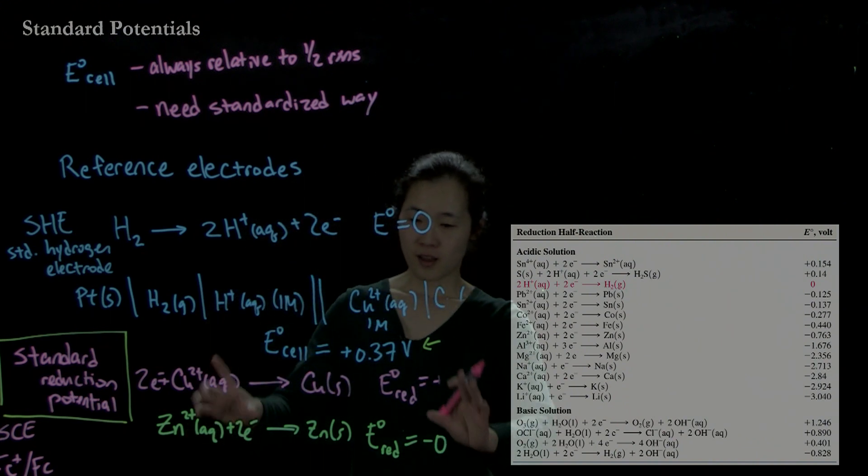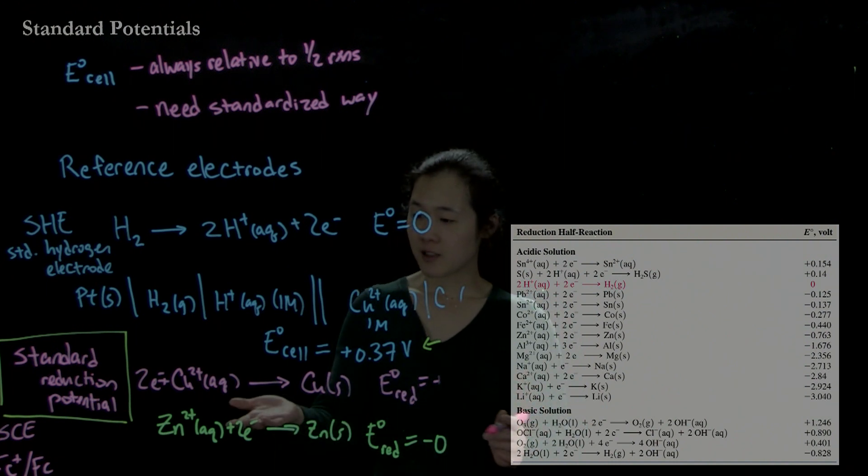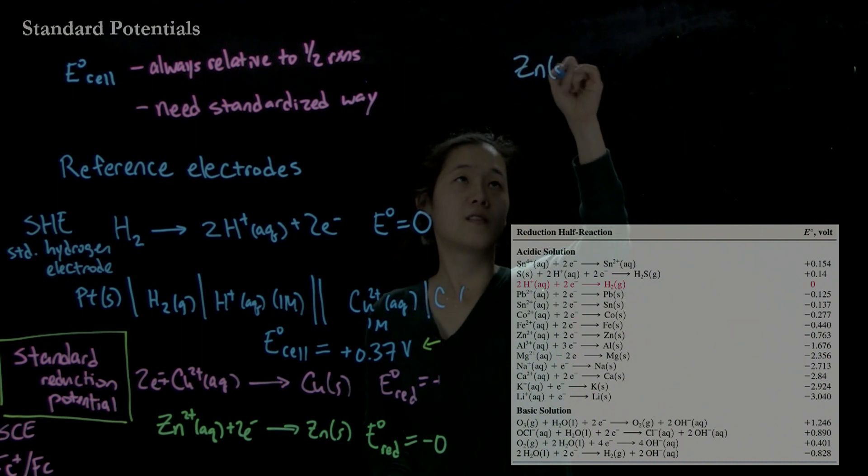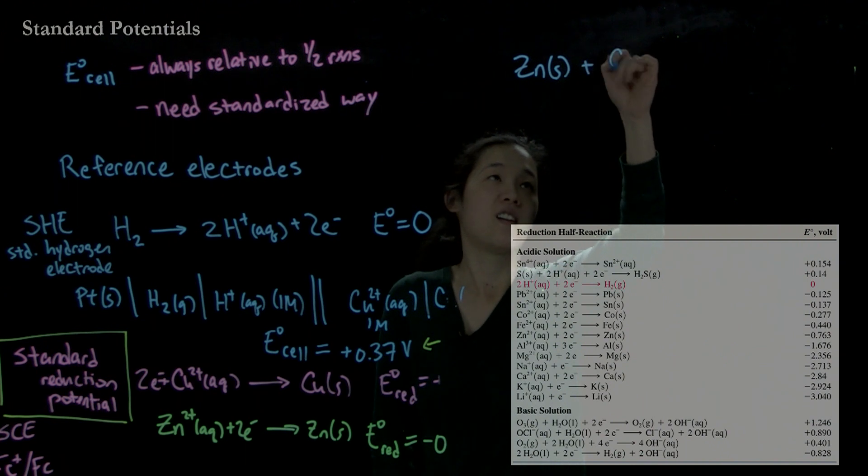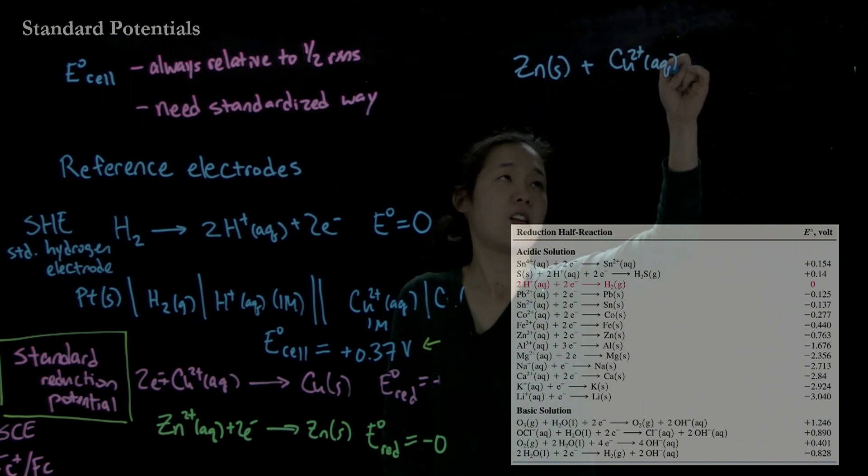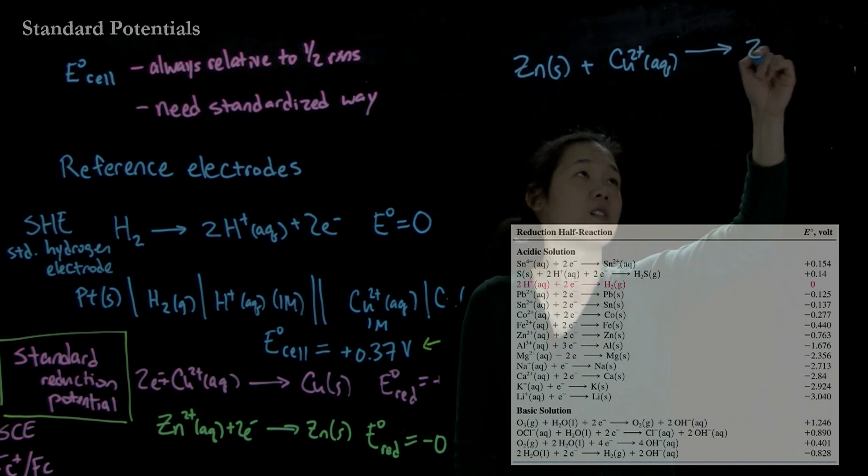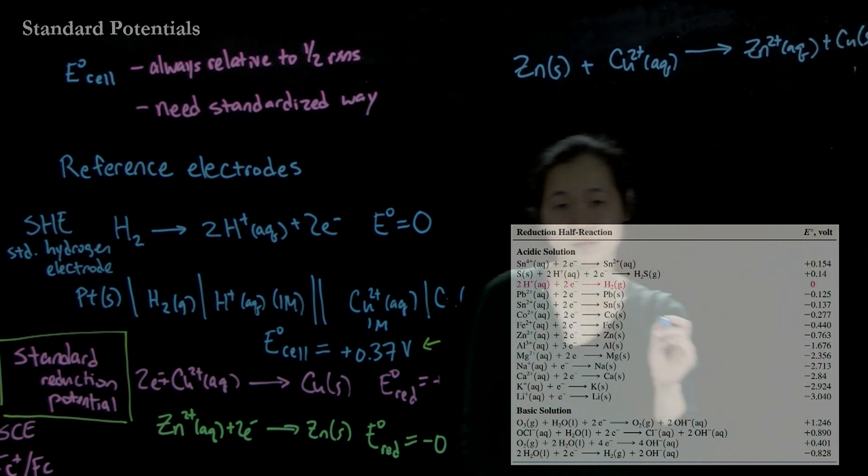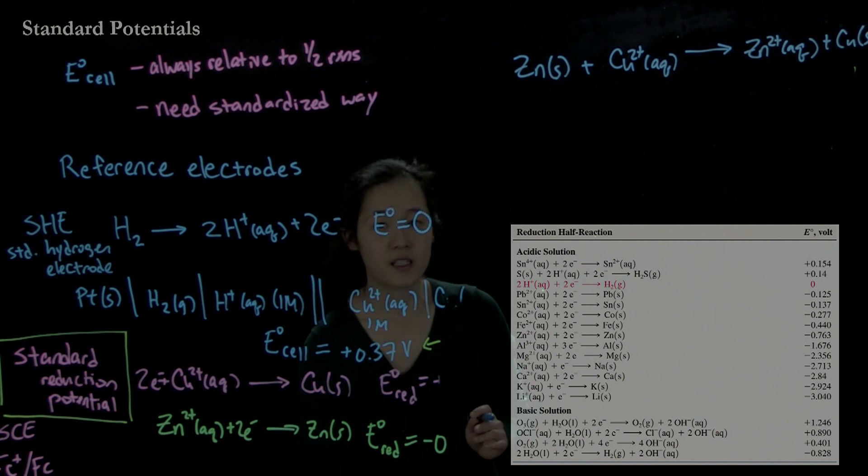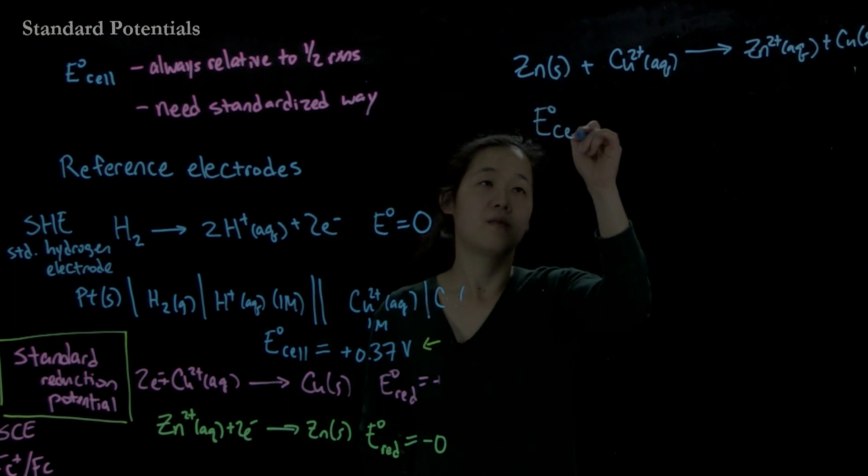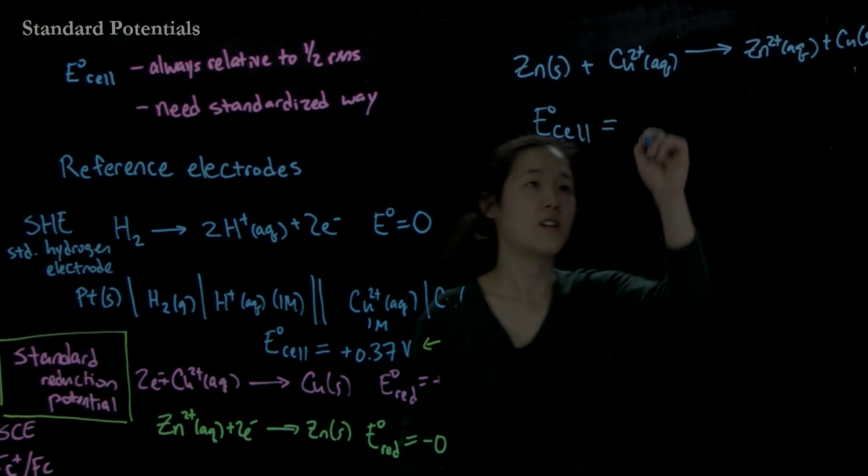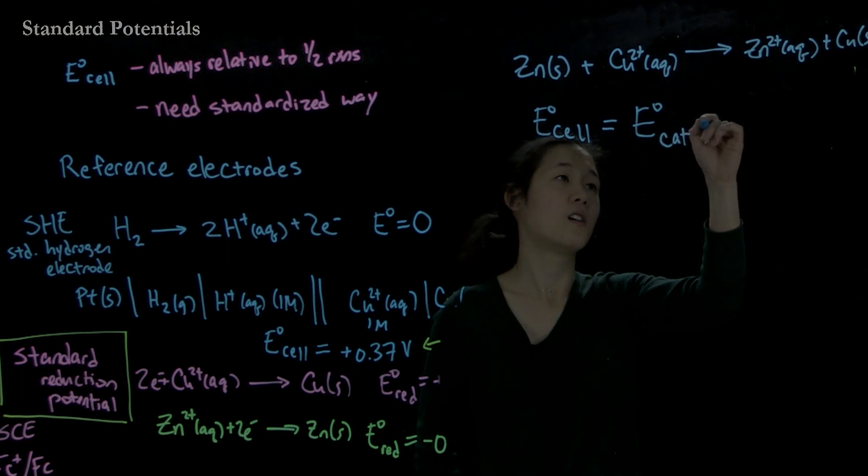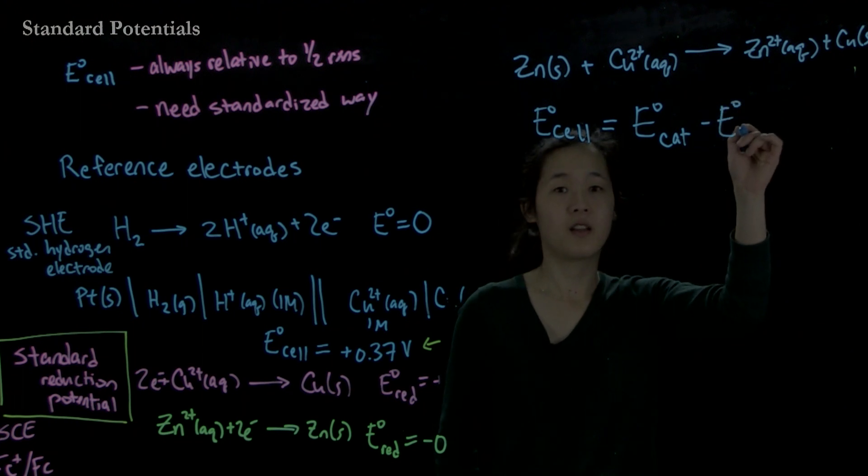Because of that, we can now use our different balanced half-reactions to figure out the E-cell if we combine multiple components of these half-reactions together. So back to this question. Suppose we wanted to find the standard potential of going from zinc metal, this is the kind of cell we've been talking about for the longest time, and we're adding copper 2+ aqueous, and we're going to zinc ions and copper metal.